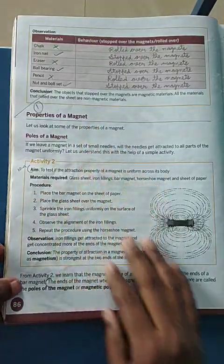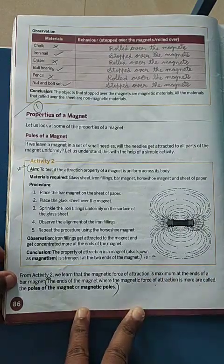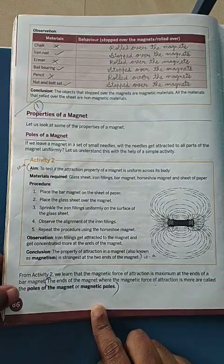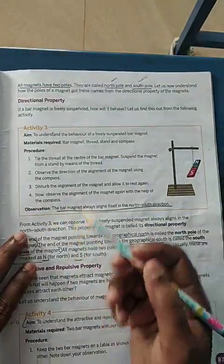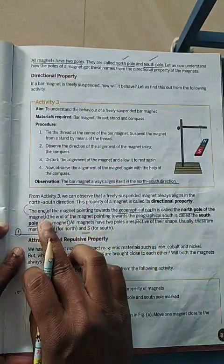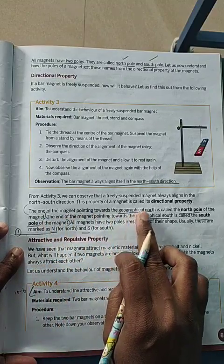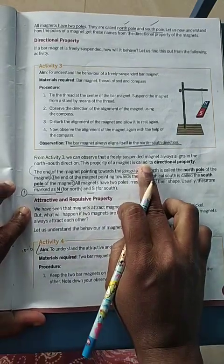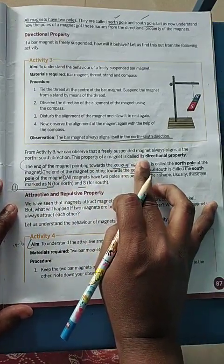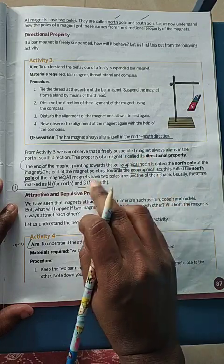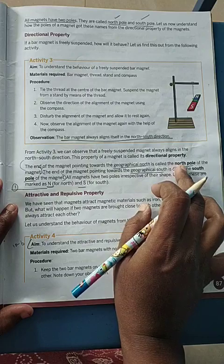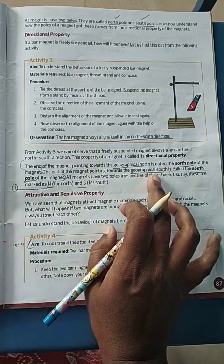In the properties, we first saw that the ends of the magnet where the force of attraction is more are called the poles. The poles are named as north and south poles. They have a directional property — the north pole will be pointing towards the geographical north, meaning the north direction of our earth. So if the magnet pole points towards geographical north it is called the north pole, and if towards geographical south it is called the south pole.